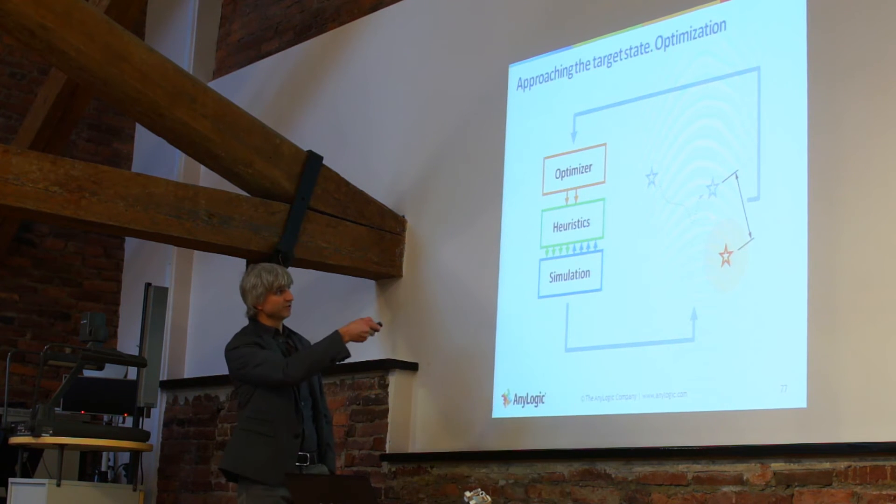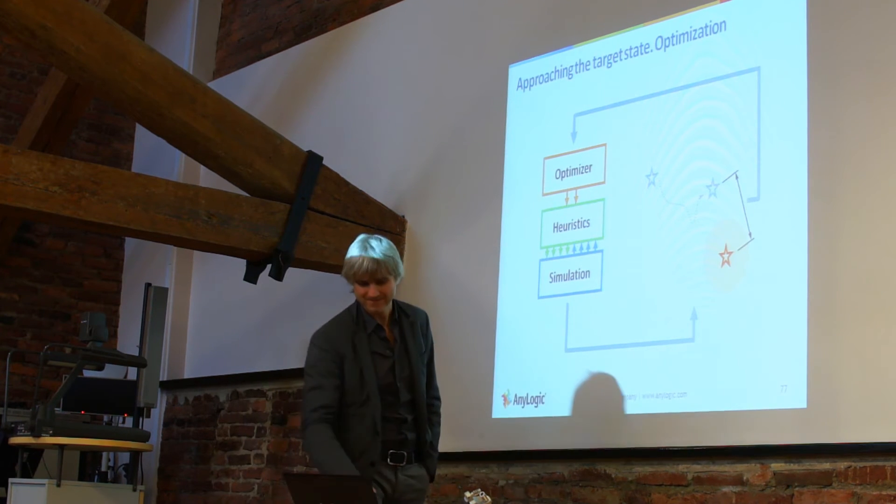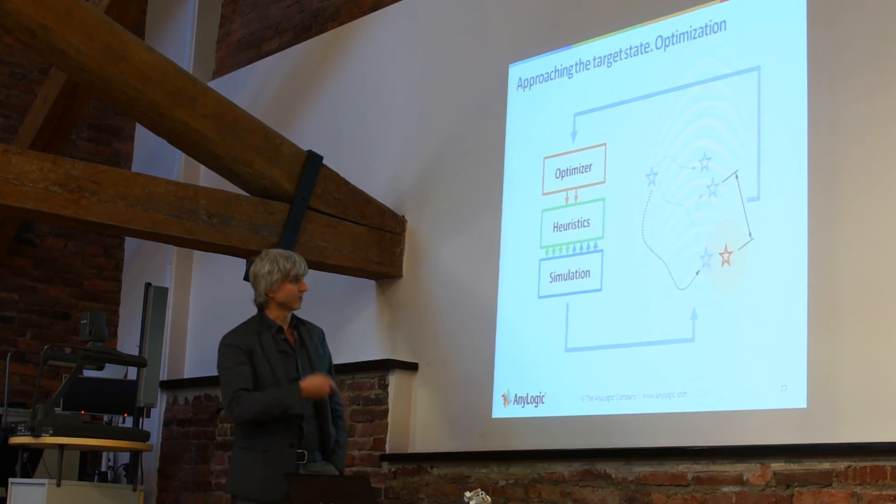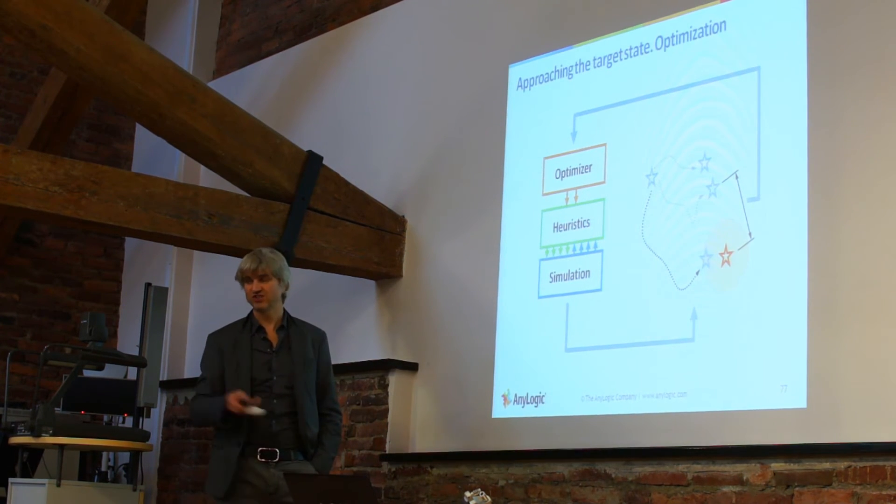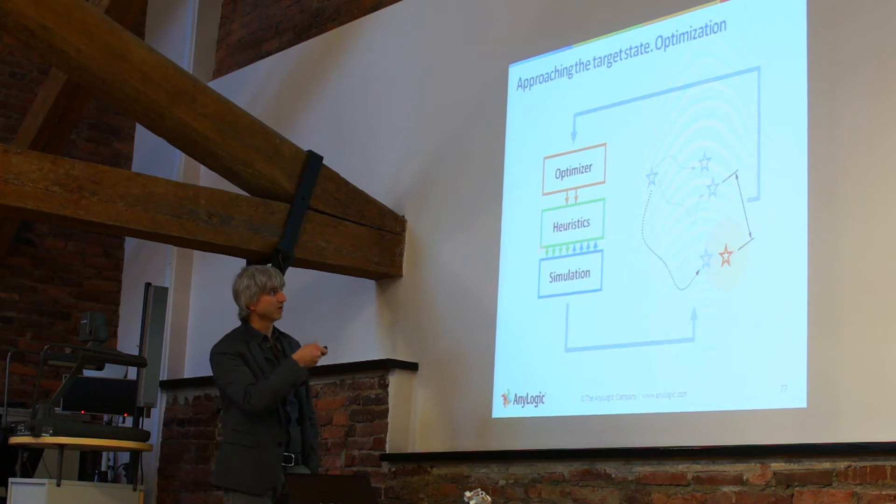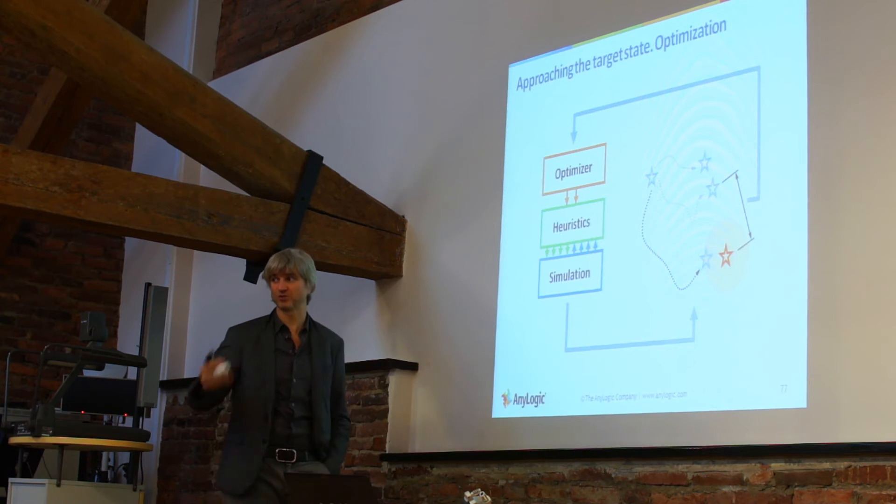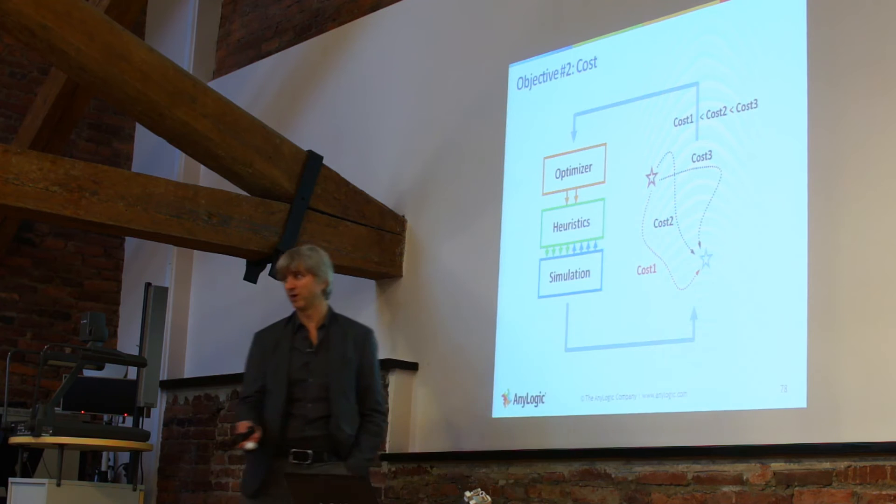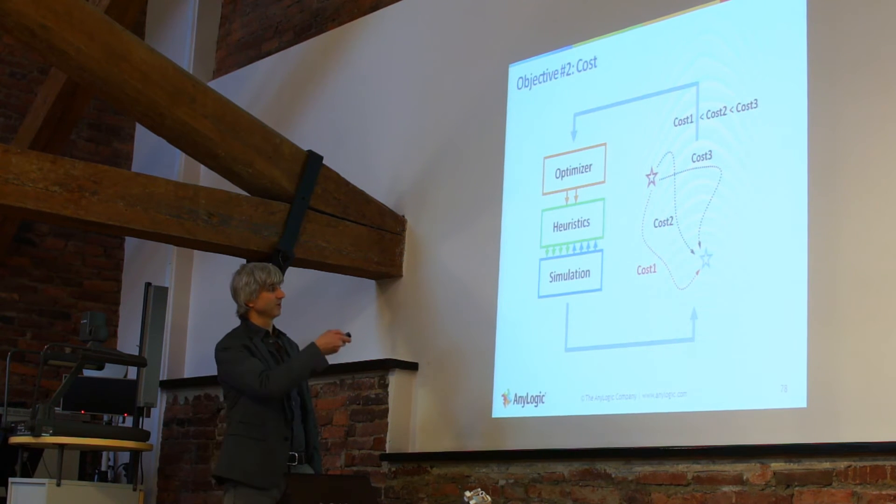So the optimizer executes the model, assesses the result, changes parameters, runs the model again. So actually tunes the heuristics while searching for the optimal transportation plan for the next two months. Cost is one of the objectives. And this picture just shows that cost is one of the input to the optimizer. Cost is calculated by the simulation model and provided to the optimizer.